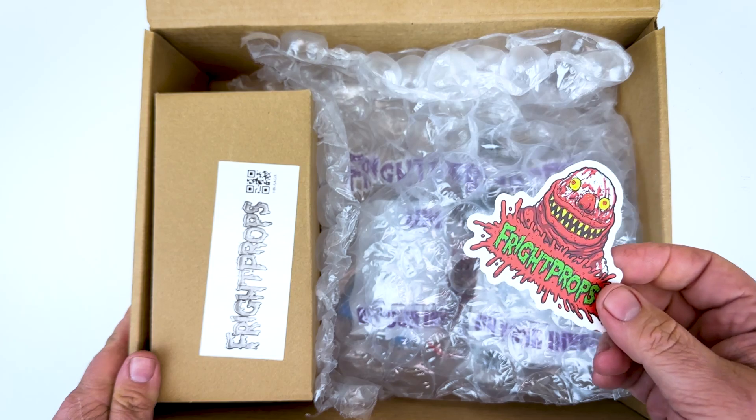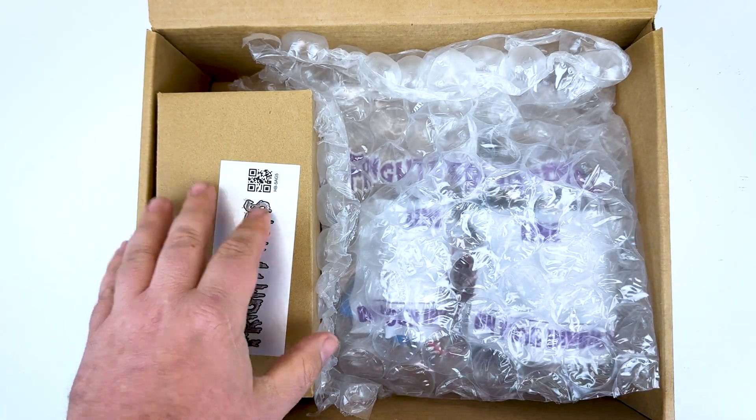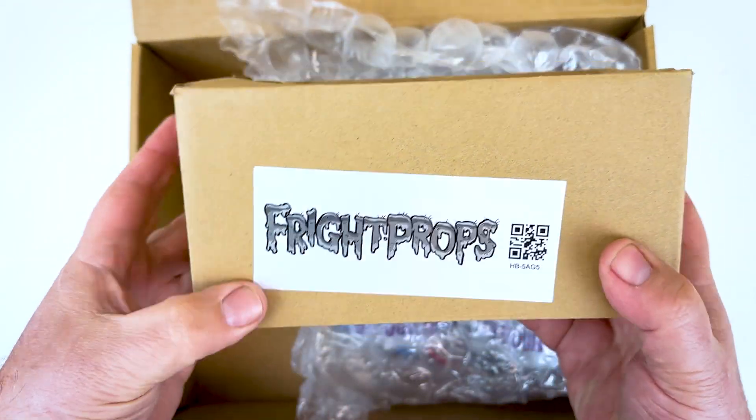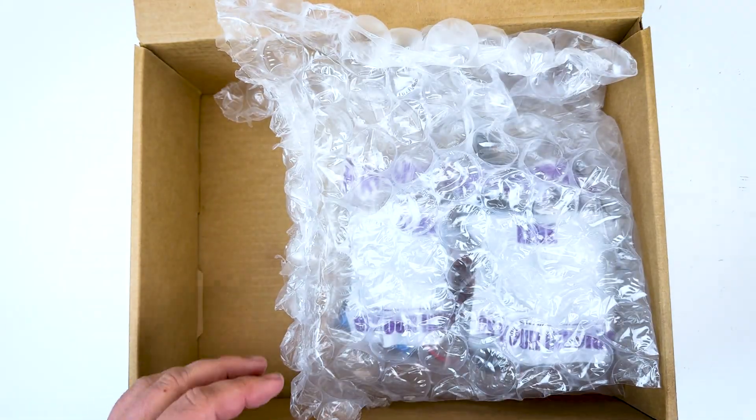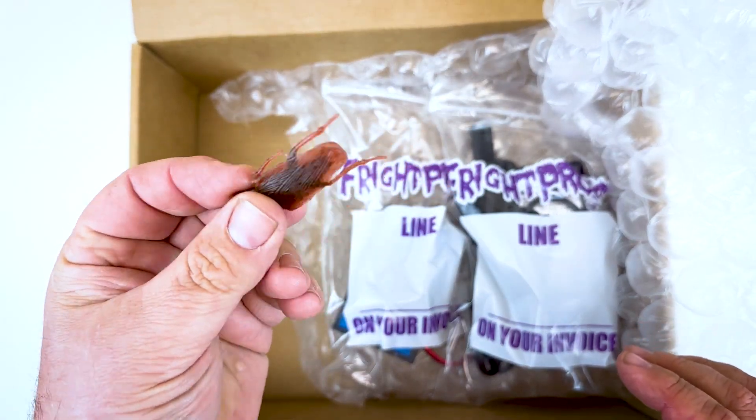We always like to throw in a sticker with every order just to make sure you have something to decorate your haunt workshop with. Next up we can see the motor itself right here. It comes in its own box just like this. You never know what other kind of surprises you might find in a Fright Props packet.